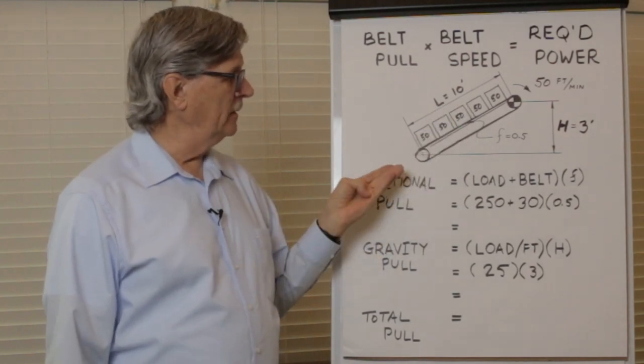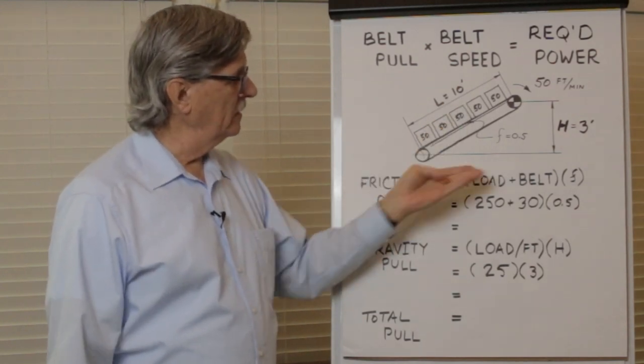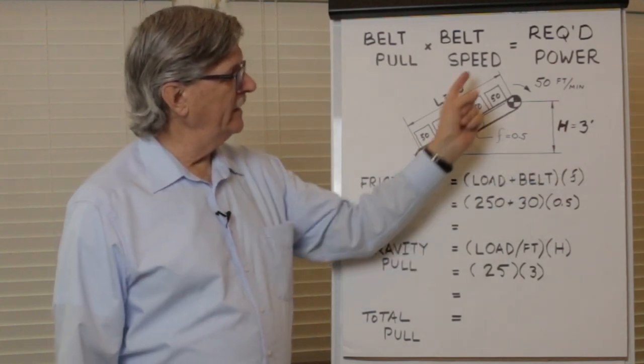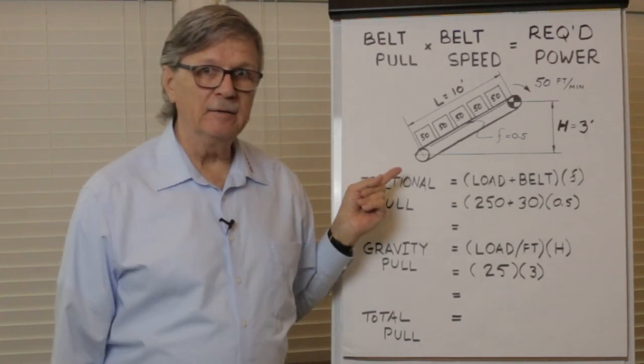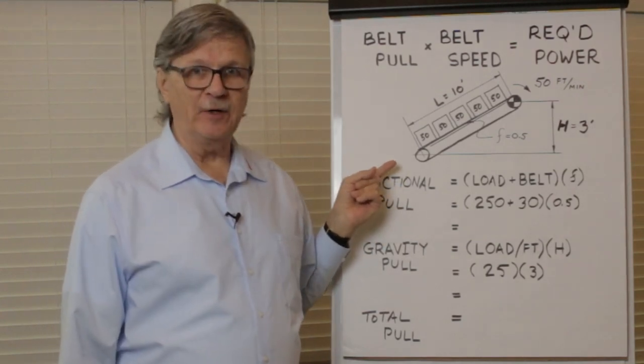In this example of a ten foot long conveyor with a three foot change in elevation moving at 50 feet per minute, we can calculate the pull required to overcome friction like this.